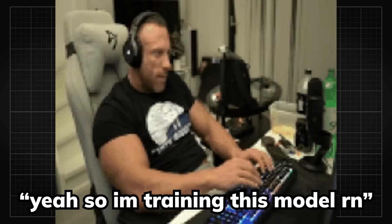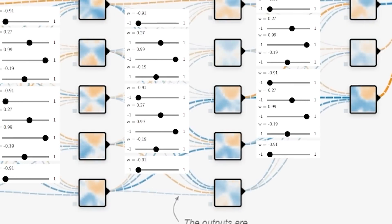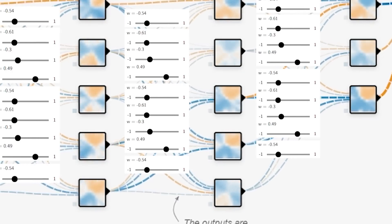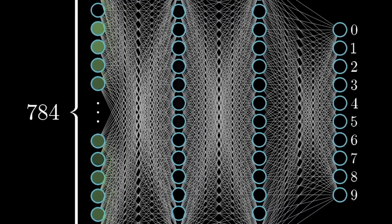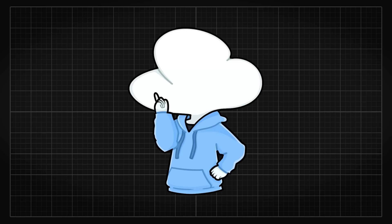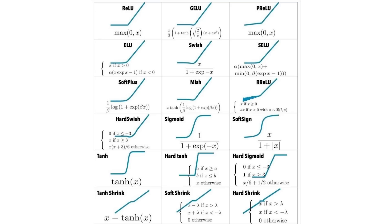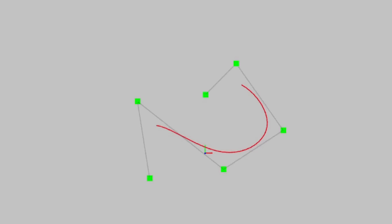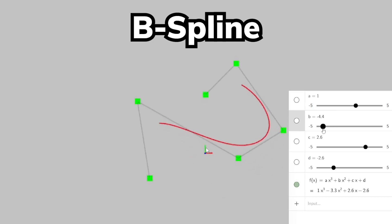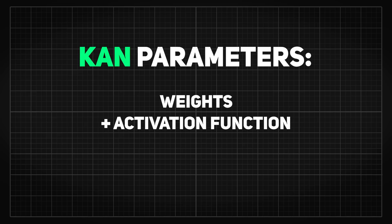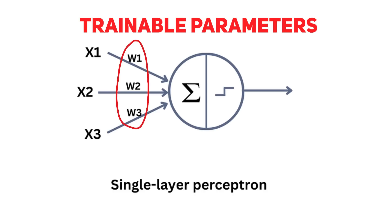So when people say they are training an AI, weights are actually the only parameters that get trained and updated in order to get the network to respond with the correct output. But with the new paradigm KAN, they have basically converted the fixed activation functions into a type of curve called a B-spline that can be parameterized, and included these into the trainable parameters alongside the weights. So KAN basically parameterizes the activation function to make it trainable.